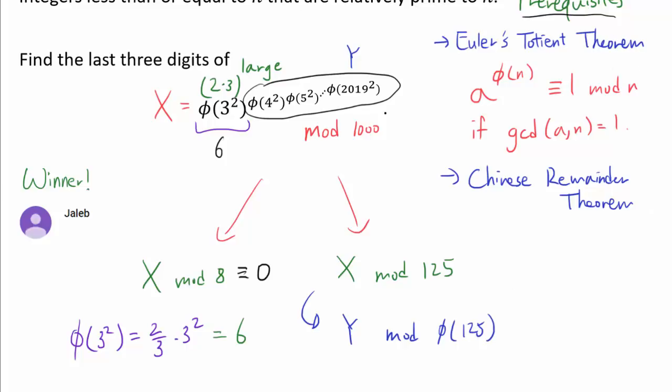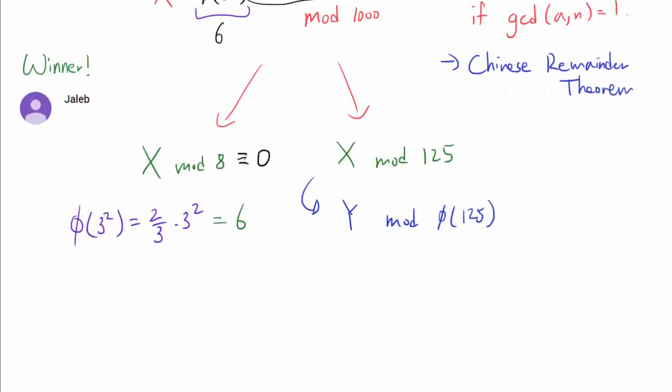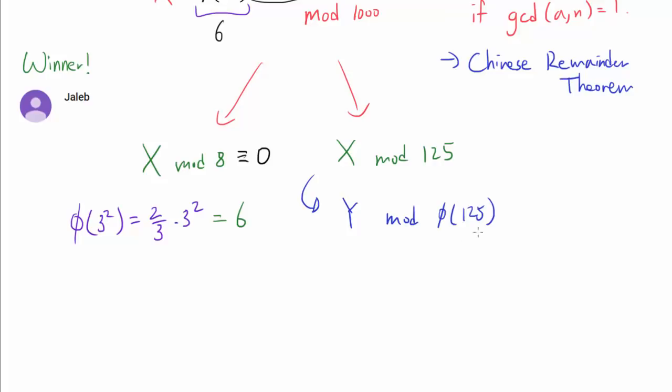We only need to find Y mod phi of 125 to find X mod 125. If you do not see what I mean, again, I encourage you to go to the video I mentioned at the beginning of this video. Anyway, mod phi of 125, that's 4 fifths times 125 or 100. So we wish to find Y mod 100 in order to find X mod 125.